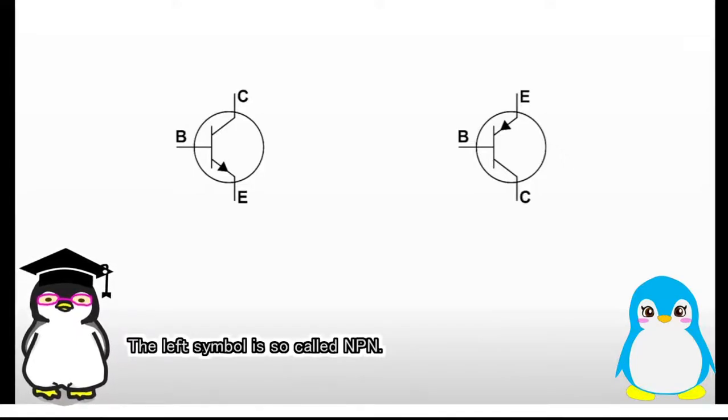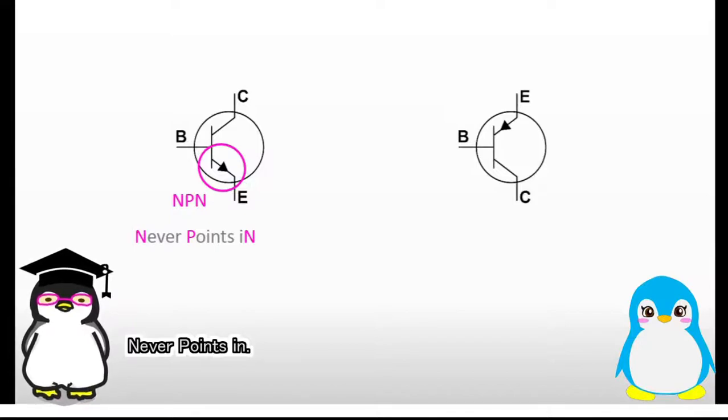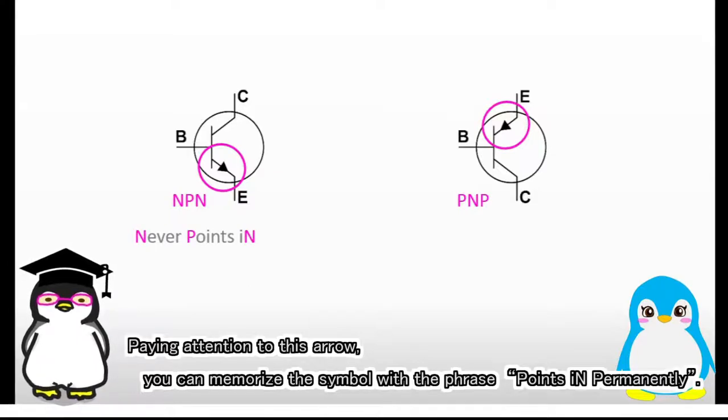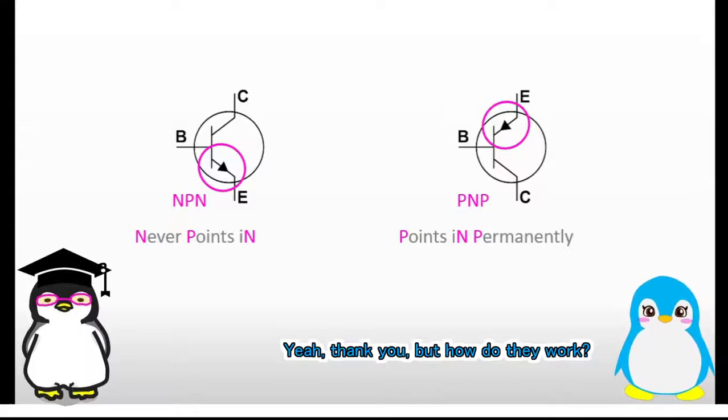The left symbol is so-called NPN. Please pay attention to this arrow. You can memorize the symbol with this phrase: Never Points In. When the right symbol is PNP, paying attention to this arrow, you can memorize the symbol with this phrase: Points In Permanently. It's easy to memorize, isn't it? Yeah, thank you.